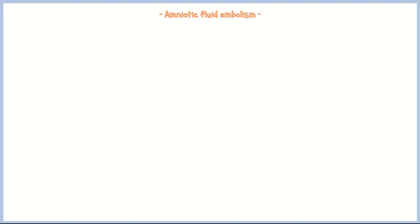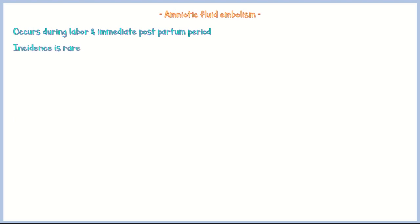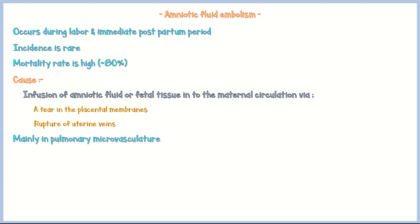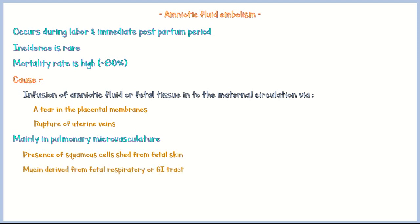Amniotic fluid embolism can occur during labor and the immediate postpartum period. Although its incidence is rare, it carries a high mortality rate. The underlying cause is infusion of amniotic fluid or fetal tissue into the maternal circulation via a tear in the placental membranes or rupture of uterine veins. These emboli mainly lodge in the pulmonary microvasculature, characterized by the presence of squamous cells shed from fetal skin, mucin derived from the fetal respiratory or gastrointestinal tract, and lanugo hair — the first hair produced by fetal hair follicles.